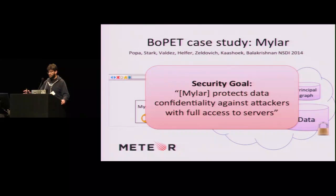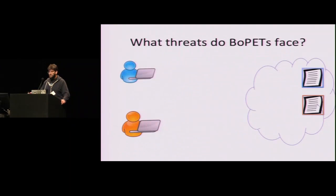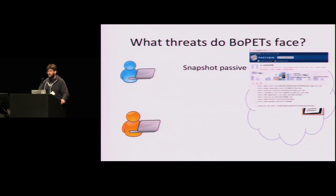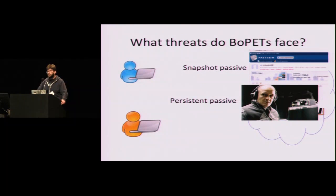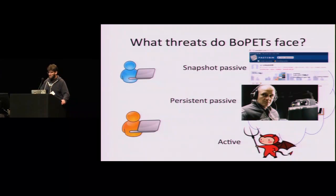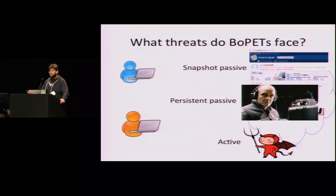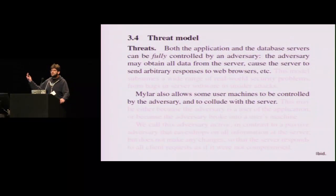The security goal of Mylar is simple: protect the confidentiality of data against attackers with full access to servers. In this work, we identified three major threat models that any BOPETS, including Mylar, should defend against. The weakest is the snapshot passive threat — a one-time compromise of the database. A stronger threat is the persistent passive model, where the adversary has persistent monitoring of the system. The strongest, claimed by Mylar, is the active threat model, which allows the server to issue arbitrary responses and even collude with some users.